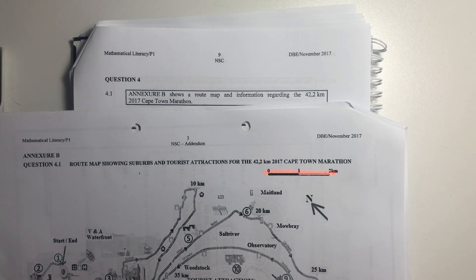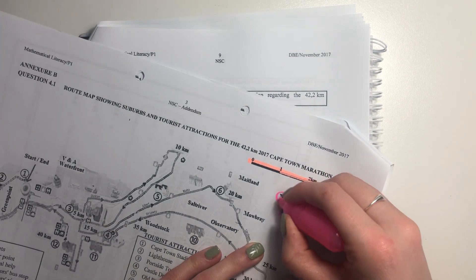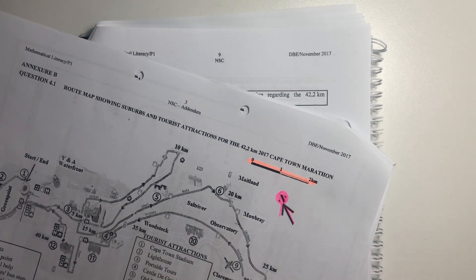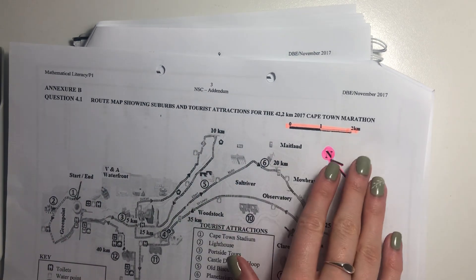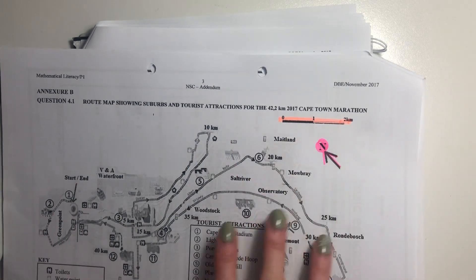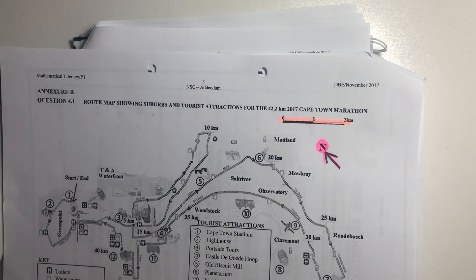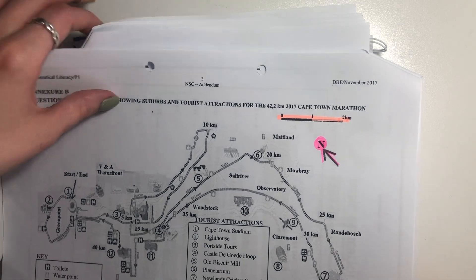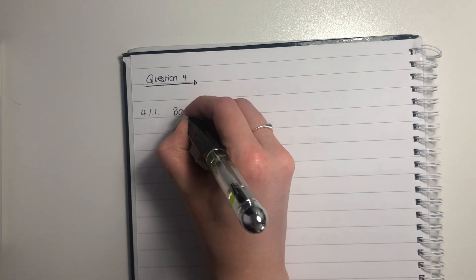In any map that you get, what's important is that you go find where north is. So this is where north is. Make sure that you indicate that, because a lot of students just assume that up is north. But generally they put north slightly off where you expect it to be, and then they ask you directions around that. So don't get caught up by that. So 4.1.1 is a bar scale.